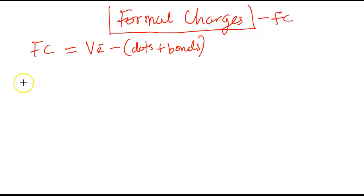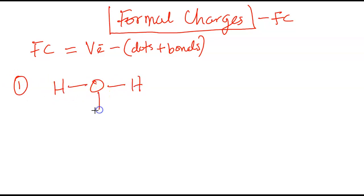Let's take some examples. Let me start with an example of a hydronium ion. Hydronium ion — if you draw the Lewis structure, it's going to look this way. Now, one important point I need to add is that for you to calculate correctly the formal charge of an atom in a compound or ion, you must make sure that atom satisfies the octet rule.